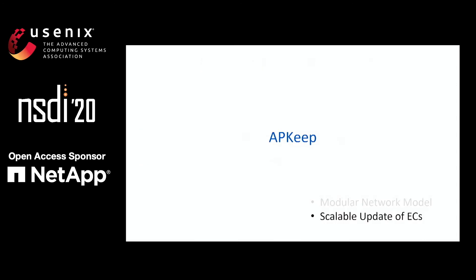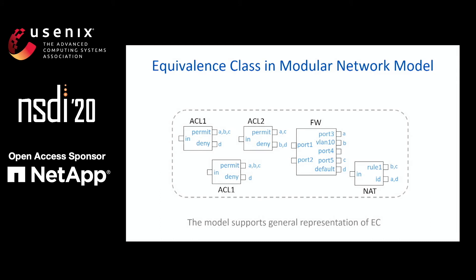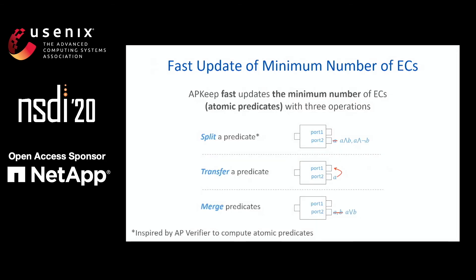Next, let's see how APKIP can achieve a scalable update based on this network model. Since each port in our model represents a distinct action on packets, an equivalent class is just a set of packets that appears at the same port for each element. Our model supports general representation of equivalent classes, which can be a range or a logical predicate. In this paper, we use atomic predicates for the definition of equivalent class. As we have mentioned, it's rather challenging to fast-update atomic predicates, so we designed three efficient operations that can be used to incrementally update atomic predicates in a fast way.